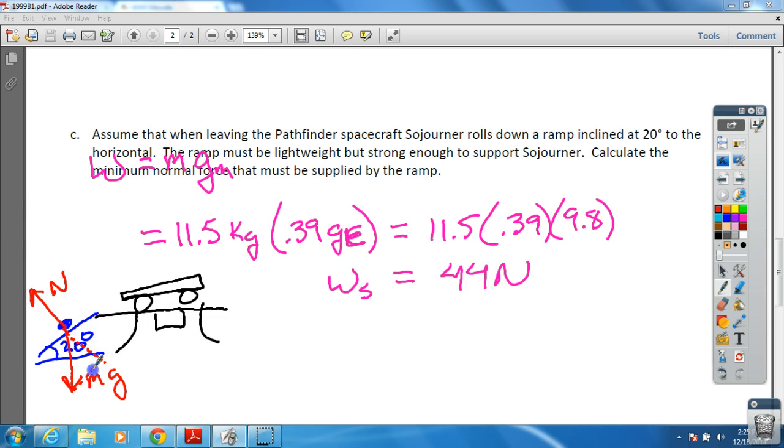So we're going to make our triangle, and from our triangle, so we can redraw this triangle here. We've got normal force here, we have mg going down, and then we've got these two things.